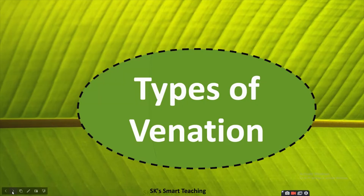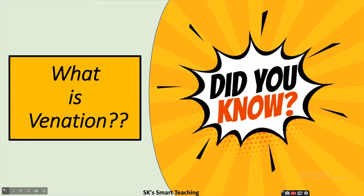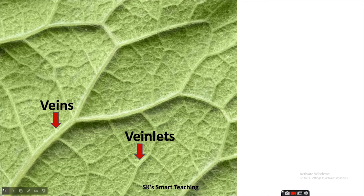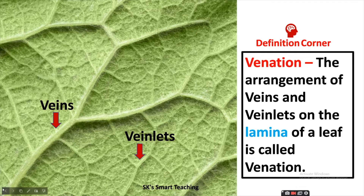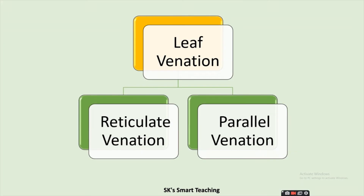Types of leaf venation. The arrangement of veins and veinlets on the lamina of a leaf is called venation. It is mainly of two types: reticulate and parallel venation.